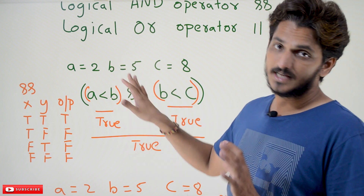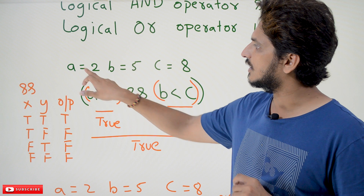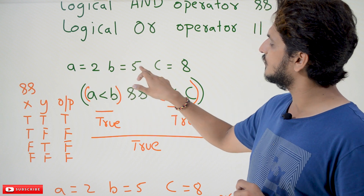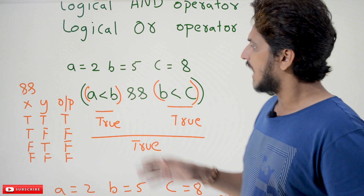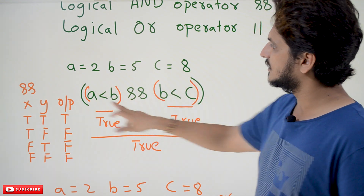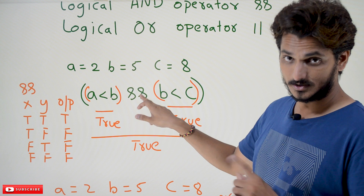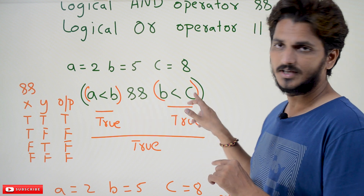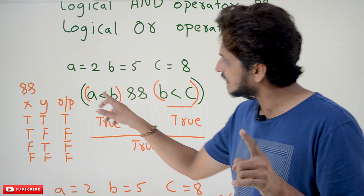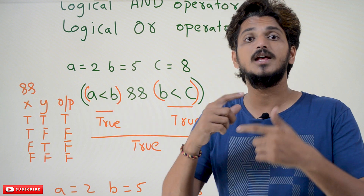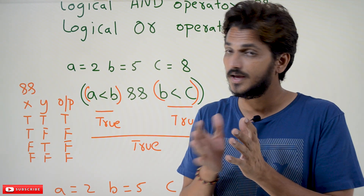Let's take an example to understand what is logical AND and logical OR. A is equal to 2, B is equal to 5, C is equal to 8. We have written a statement like this: A less than B AND B less than C. In our last class, we clearly discussed that A less than B is a relational operator.